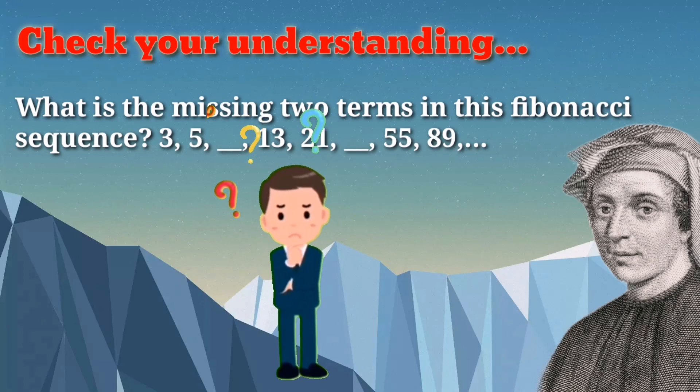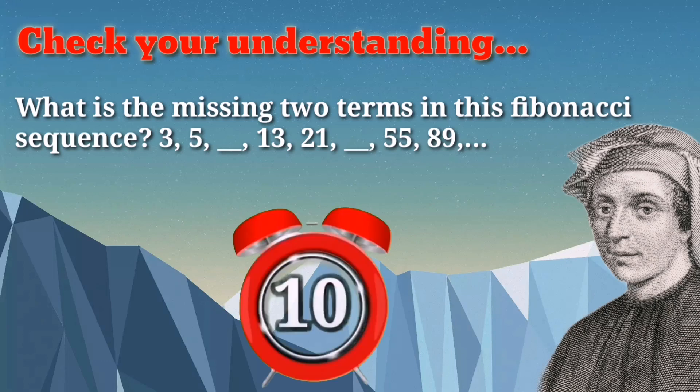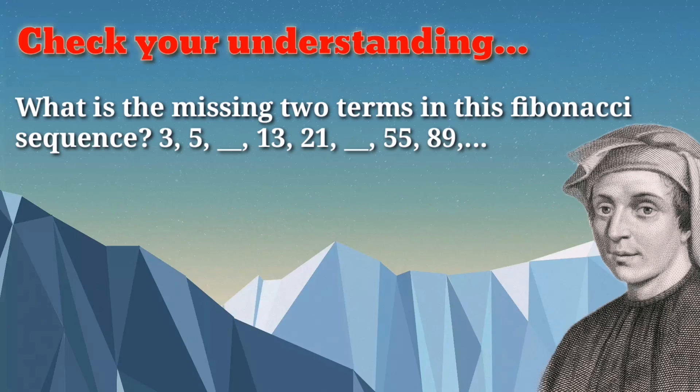What is the missing two terms in this Fibonacci sequence? 3, 5, blank, 13, 21, blank, 55, and 89. You have 10 seconds to answer the question. Time is up, and the answer is 8 and 34. Got it? Very good.